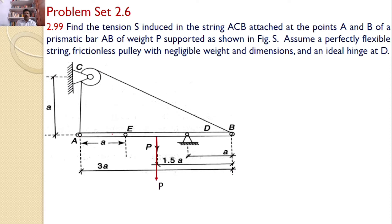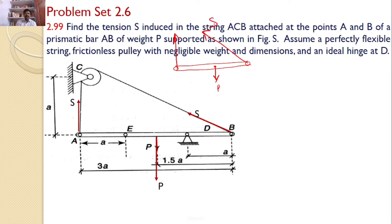Let us consider the free body diagram of AB alone, taking only AB. The various forces acting are: self-weight P, as we can see here; the string force S at B; and the string force S at A — a vertical string force. Only three forces. Two reactions will develop at the hinge, but we are taking moments about that point, so we need not consider those forces.